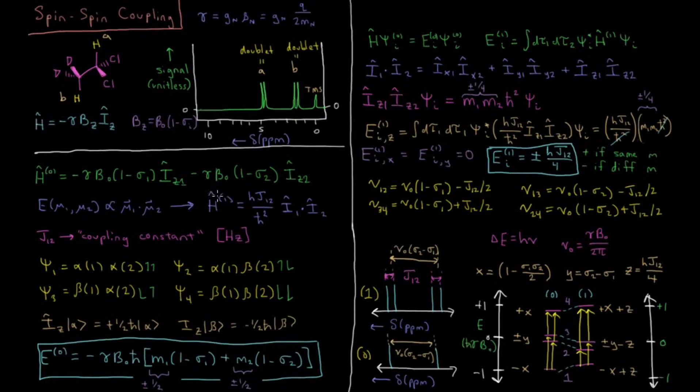And that will be our perturbation, our H1 here, our perturbative Hamiltonian. And that's going to equal Planck's constant times J12, which is called the coupling constant, the coupling constant between nucleus one and nucleus two. And that has a unit of Hertz as we define this Hamiltonian here. So H times J12 over h-bar squared. And all of this is really just a constant, it's really just a proportionality constant, but we want to write this such that J has a unit of Hertz for reasons that we'll see later.